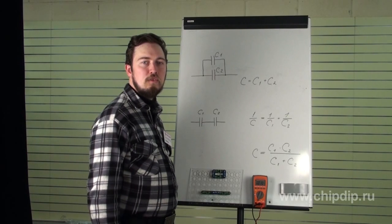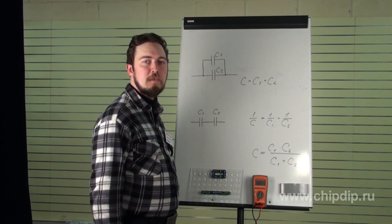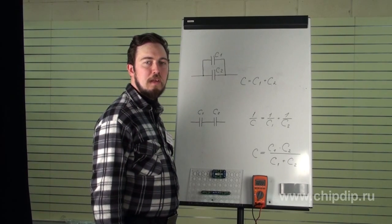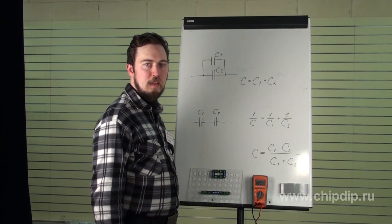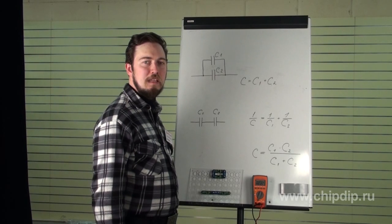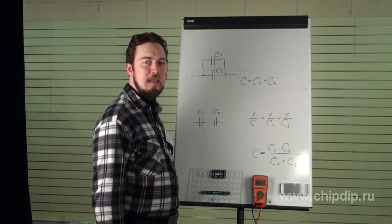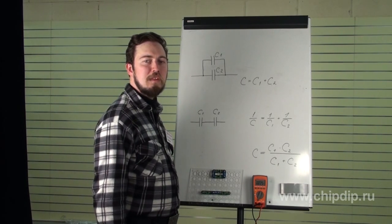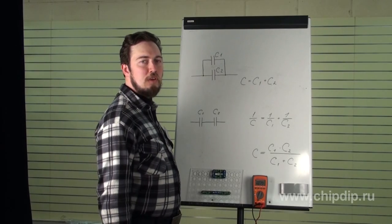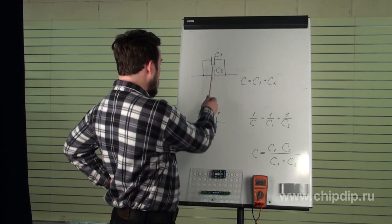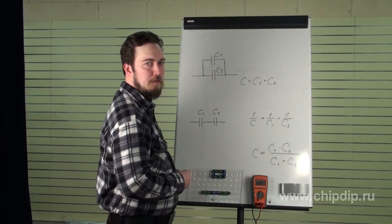It often happens that when we are wiring or replacing a malfunctioning unit, we are restricted by the number of available radio elements. And it's not always that we can find the elements with the required ratings. In this case, we need to use series and parallel circuits in order to obtain the necessary values. Let's look at how to calculate the total capacitance of capacitors connected in parallel and in series.